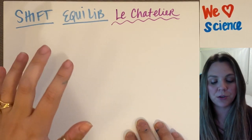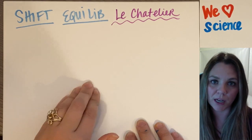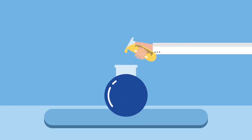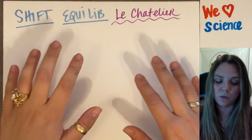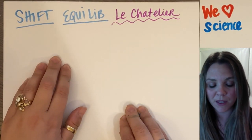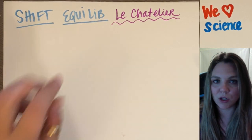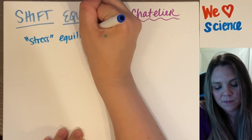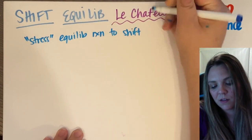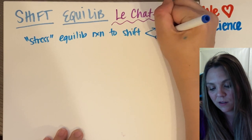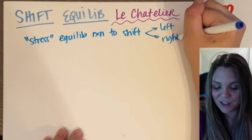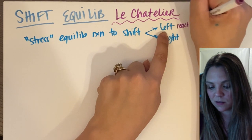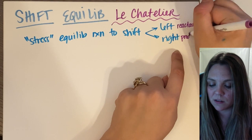In this video, we look at how to shift the equilibrium of an equilibrium reaction and Le Chatelier's Principle. Once I have a reaction in equilibrium, I can shift that equilibrium — it's called stressing. I can stress an equilibrium reaction to shift the reaction to go either left or right. If I shift the reaction left, I'm going to make more reactants. If I shift the reaction right, I'm going to make more products.